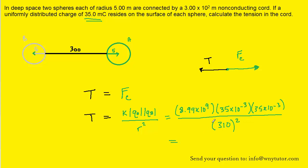You can pick up your calculator and plug that in. And when you do so, you should get approximately 115 newtons. So this is the correct answer for the tension force that exists in the chord.